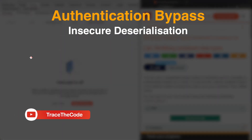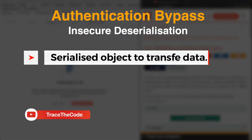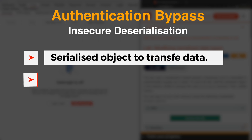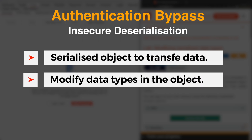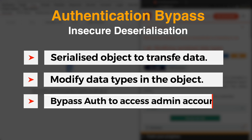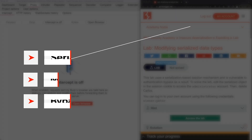If a web application that is using serialized objects to transfer sensitive data between web browser and web server doesn't properly check the authenticity of the serialized objects, then an attacker might be able to modify the data types of the object attributes to bypass authentication and get access to administrator account. During this video, we look at this scenario in action.